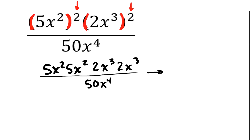One tool you can use is expanding — write them out in expanded notation showing the repeated multiplication. I'm multiplying 5x squareds. How many do I have? Two of them. So I can write 5x squared, 5x squared, and also 2x cubed, 2x cubed. Looking across my numerator, I'm multiplying a 5, a 5, a 2, and a 2. That's 25 times 4, or equivalently 5 times 2 is 10, times 10. Either way, it doesn't matter the order — it ends up with a product of 100.